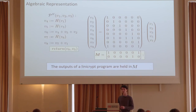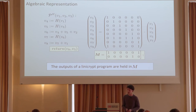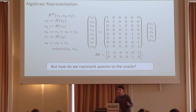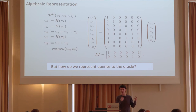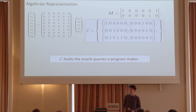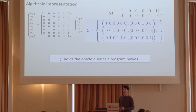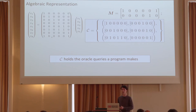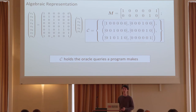To separate the outputs of the lineecrypt program from the rest, we keep all outputs inside a new matrix called M. However, there's internal structure we don't capture through this simple representation: the relationships imposed by oracle queries. That's why we have the full algebraic representation using C and M. M holds the outputs, while C is a new matrix representing both the base vectors of our system and the relationships imposed by oracle queries. This allows us to uniquely construct a lineecrypt program.